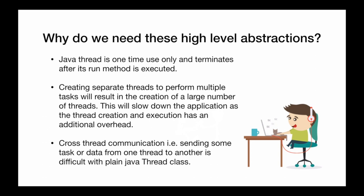The question is: why do we need these high-level abstractions? Java provides us with thread and various concurrent utility classes. Java thread is one-time use only and terminates after its run method is executed. Creating separate threads for multiple tasks results in a large number of threads, leading to larger memory allocation and more overhead in switching execution between threads. Cross-thread communication is very difficult to do with plain Java classes, so these Android classes help solve these problems.